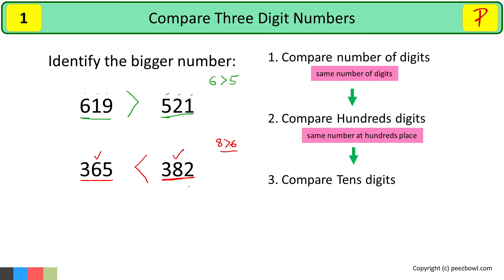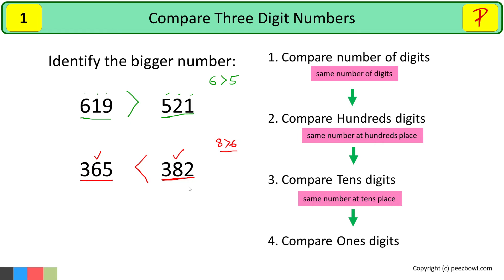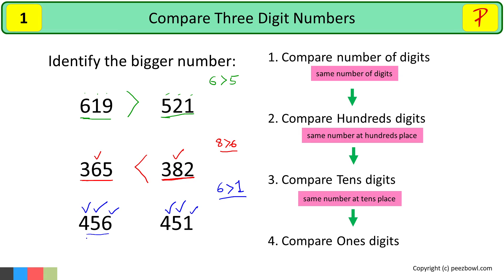Now what will happen if both the numbers have the same digits at the hundreds place and tens place both? In that case, we will compare their ones digits. The number having greater ones digit will be the bigger number. Let us take one more example. We are comparing 456 and 451. Both these numbers have 4 at the hundreds place and 5 at the tens place. So we will compare their ones digits. In 456, we have 6 at the ones place, and in 451, we have 1 at the ones place. As 6 is bigger than 1, so 456 is bigger than 451. I will place an open crocodile face towards 456. This is the bigger number.